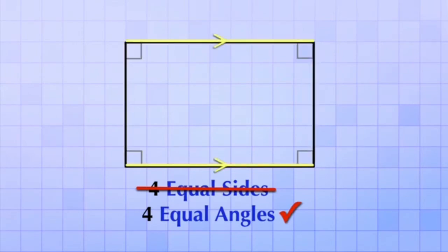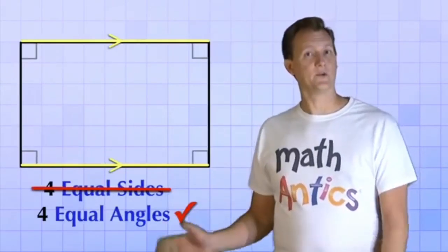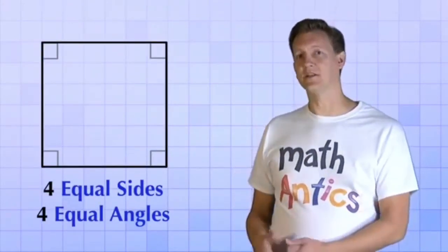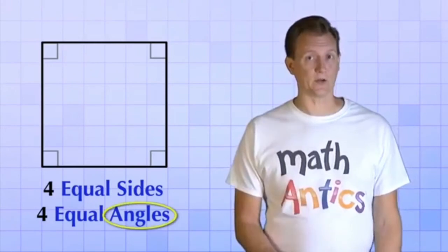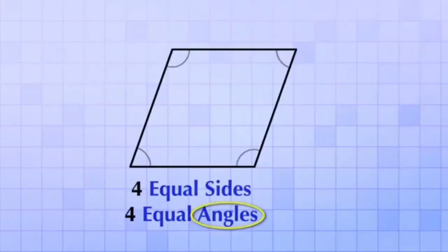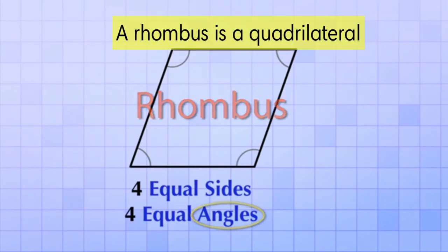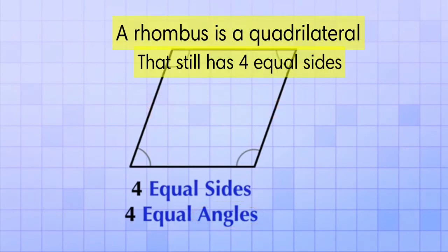All right, so that's a rectangle. But going back to our square, what if instead of changing the sides, we had just changed the angles like this? What we have now is called a rhombus. A rhombus is a quadrilateral that still has four equal sides, but it does not have four equal angles.